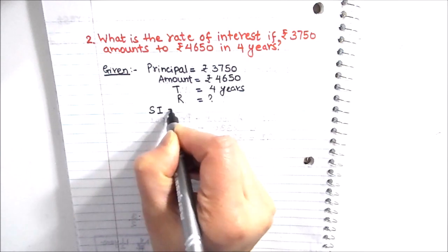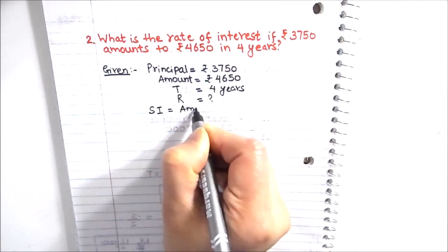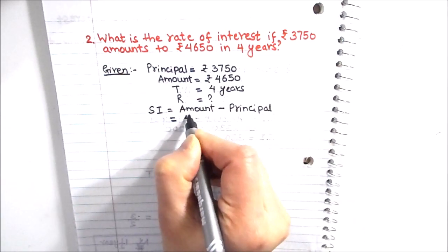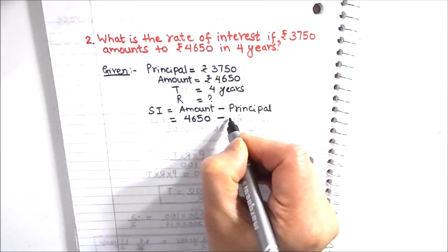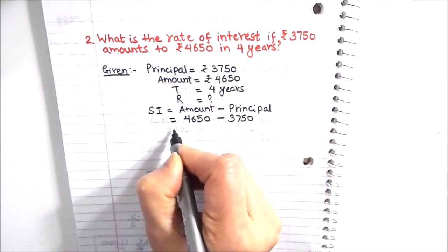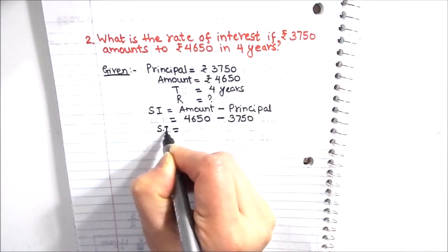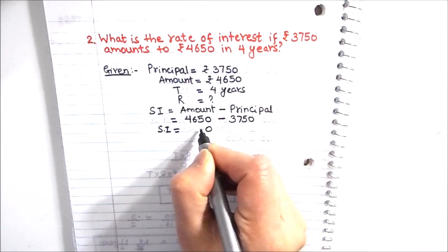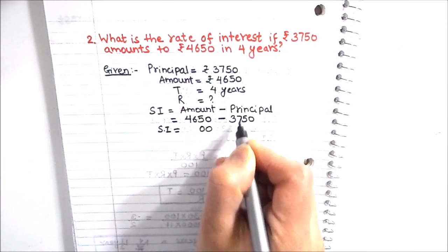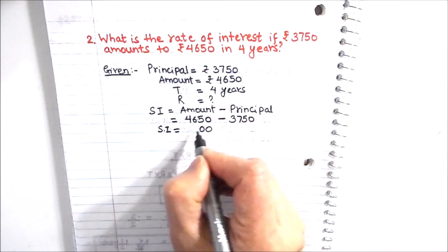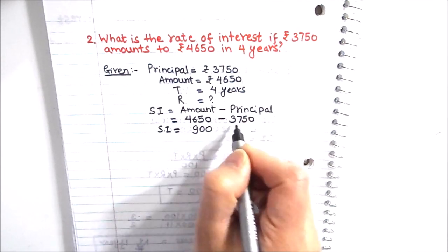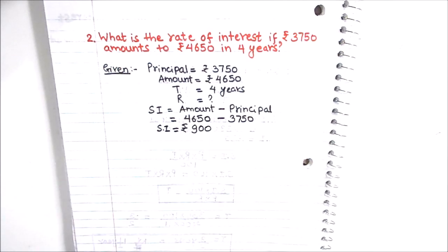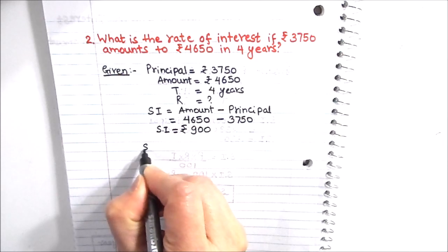First we find the simple interest using: Simple Interest = Amount − Principal. So SI = 4650 − 3750. Subtracting: 0 minus 0 is 0, 5 minus 5 is 0, 6 minus 7 requires borrowing so 16 minus 7 is 9, and 3 minus 3 is 0. Therefore Simple Interest = rupees 900.